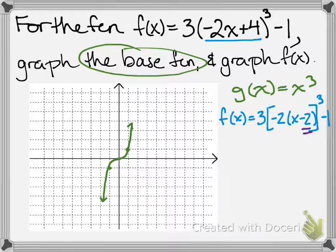So now if we look at the -2 and -1 it's going to move our vertex 2 to the right and 1 down. So there's our vertex.